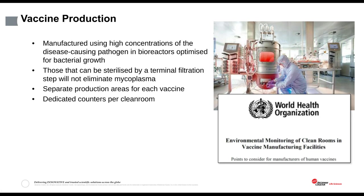Vaccine manufacturing plants are a unique subset of biopharma production in that vaccine production is quite often done by cultivating high concentrations of disease-causing pathogen in bioreactors optimized to support cell growth. Unfortunately, these bioreactors are also optimal for microbial growth, giving the manufacturer additional challenges over and above other injectable drug manufacturers. Extra care must be taken to avoid bacteria from production staff getting into the bioreactors, and great care must be taken to prevent cross-contamination between production lines. The World Health Organization has dedicated guidance specifically for environmental monitoring of clean rooms in vaccine manufacturing facilities.